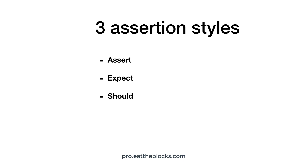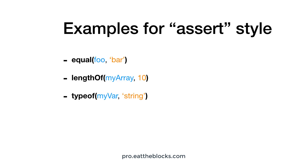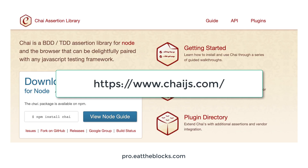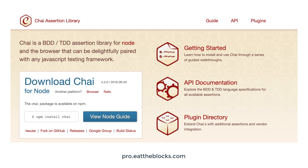Personally I prefer the assert style. For example, some of the assertions you can find in the assert style are: equal, where you compare a variable against a value; lengthOf, where you compare an array to an expected length; and typeOf, where you can compare a value with a type. If you want to know more about which assertions are available, go to the website of Chai.